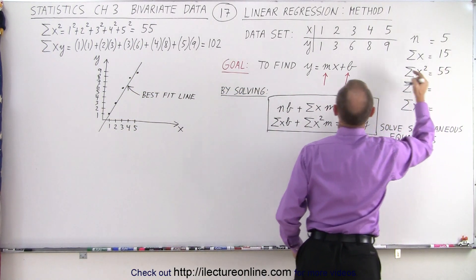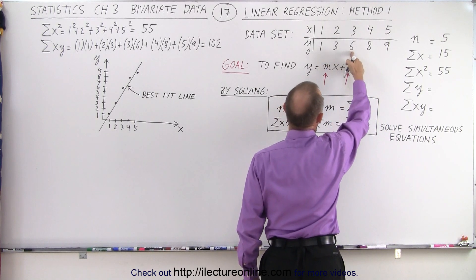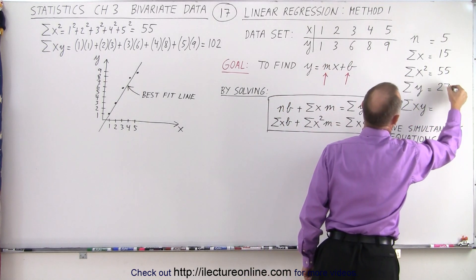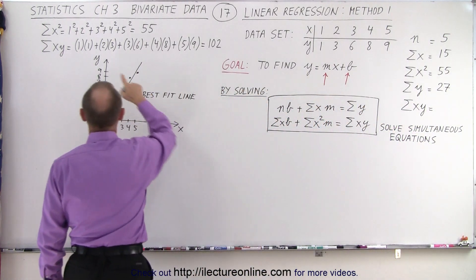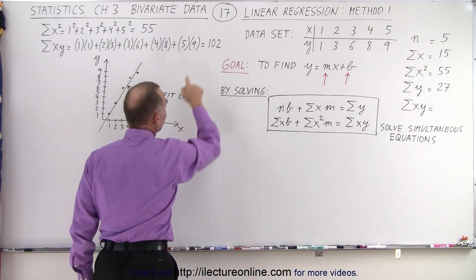The sum of all the y values, 1 plus 3 plus 6, that's 10, 18, that's 27. And finally, the sum of the product of all the x and the y values, I've already done that over here, and you can see that's equal to 102.